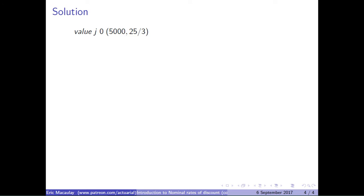The value of j of 0 of 5,000 at 25 over 3, using the definition for value, gives us 5,000 times 1 plus j to the power of 0 minus 25 over 3.